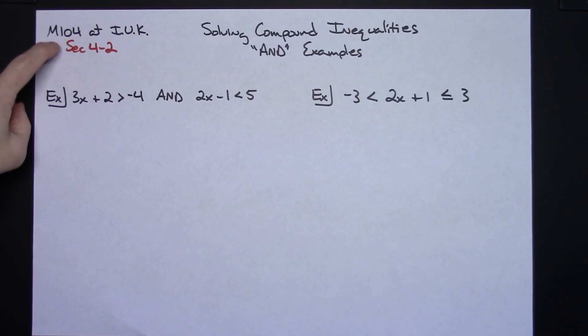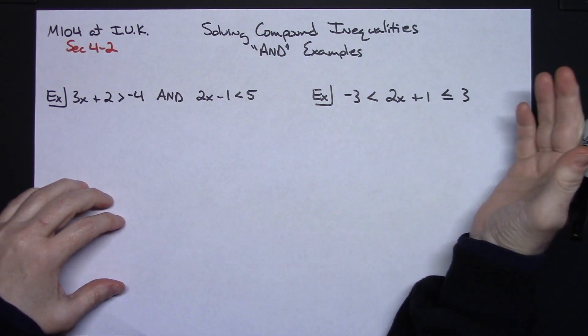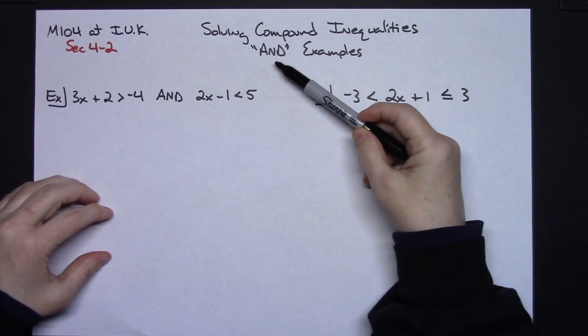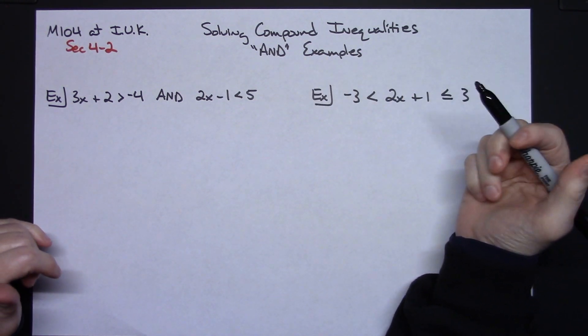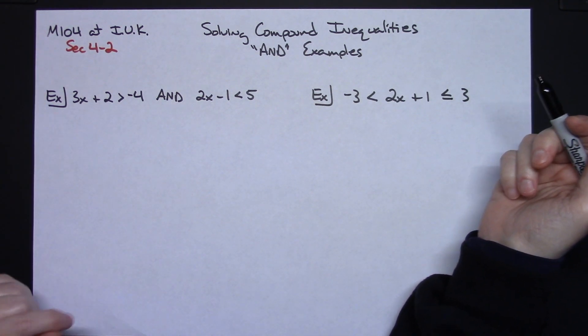In this video, I'm going to be specifically making it for my M104 classes at IUK. I'm going to be doing two examples here of solving compound inequalities. They are going to be AND examples versus the OR type of compound inequalities. These are going to be problems that you would encounter in section 4-2.